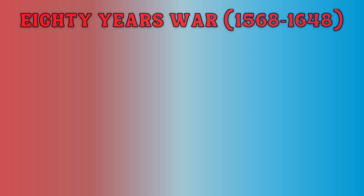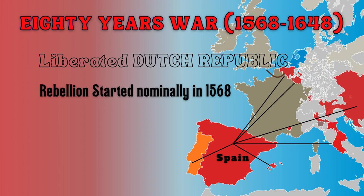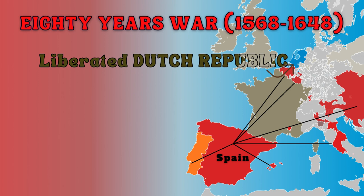The Dutch Revolt, also known as the Eighty Years' War, was a prolonged armed conflict that took place in the Habsburg Netherlands between Spain and various rebel groups. The rebellion started nominally in 1568 with the execution of Counts Egmont and Horn, and by 1609, a 12-year truce had been established, revealing most of the outcomes of the conflict. During this time, it passed through different phases and had a number of surprising and enduring effects on world politics and commerce.